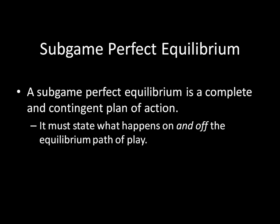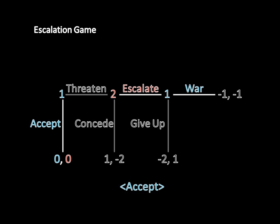A subgame perfect equilibrium is a complete and contingent plan of action — it must state what happens both on and off the equilibrium path. The reason this is so important is that if you just say the equilibrium is player 1 accepts, that doesn't tell us why player 1 is accepting. We know he gets 0 and player 2 gets 0, but there's no indication why this is a rational move for player 1.